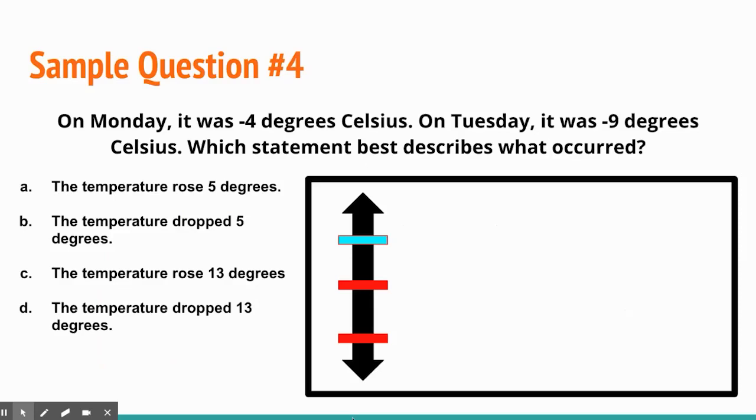Next question. On Monday, it was negative four degrees Celsius. On Tuesday, it was negative nine degrees Celsius. Which statement best describes what occurred? So even if we look here, we have our four options, but to draw it out to see some sort of mental image of what's happening using zero is helpful.